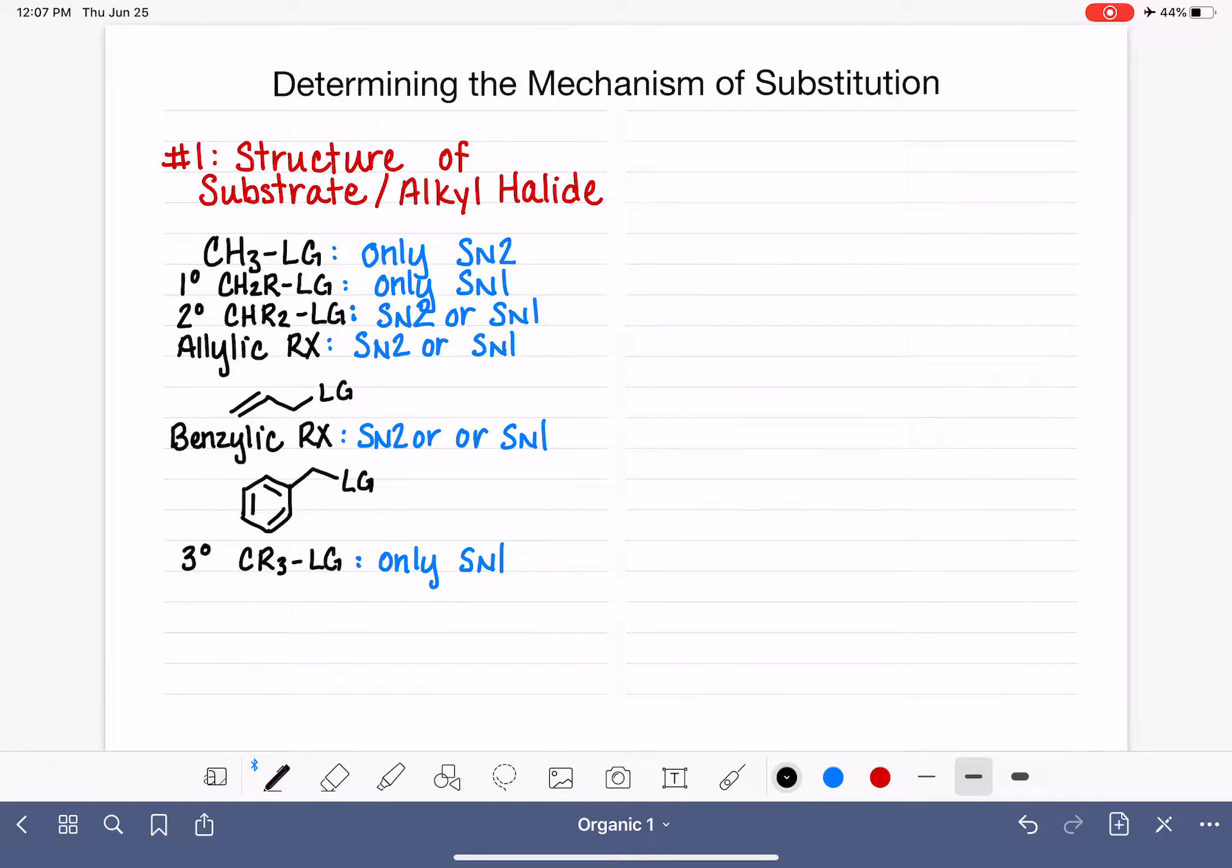Here is an example of a benzylic molecule. Like allylic, it is a leaving group that's attached to a carbon that is directly attached to, in this case, a benzene ring. But you'll see that allylic and benzylic, they really just have the same sort of pattern.